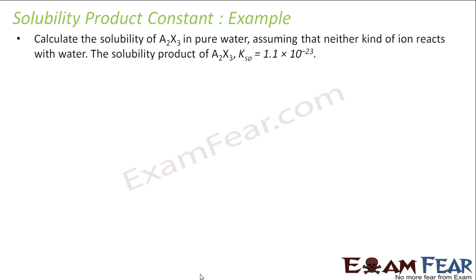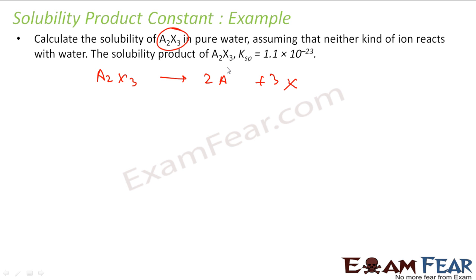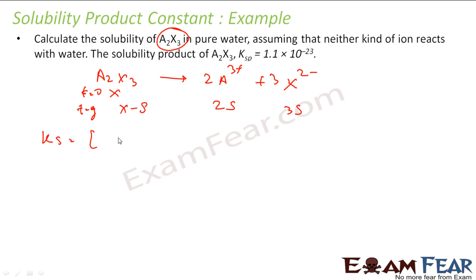Let's find the solubility product of A₂X₃ in water, assuming neither kind of ion reacts with water. A₂X₃ dissociates into 2A³⁺ and 3X²⁻. Let S be the solubility. At equilibrium, the concentration of A³⁺ is 2S and the concentration of X²⁻ is 3S. So Ksp equals [A³⁺]² × [X²⁻]³.